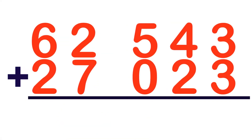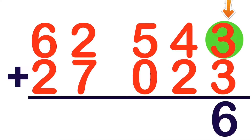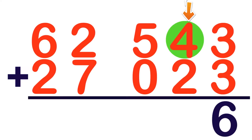How about if we have 62,543 plus 27,023? Again, children, we are going to start at the 1's place. 3 plus 3 — 3 on your mind: 3, 4, 5, 6. So, 3 plus 3 is equal to 6. Let's go to the 10's place — 4 plus 2. 4 on your mind: 4, 5, 6. So, 4 plus 2 is equal to 6.